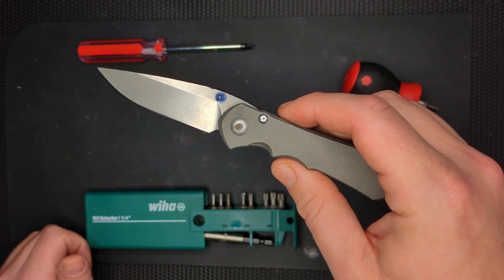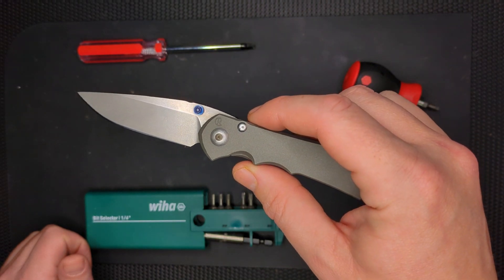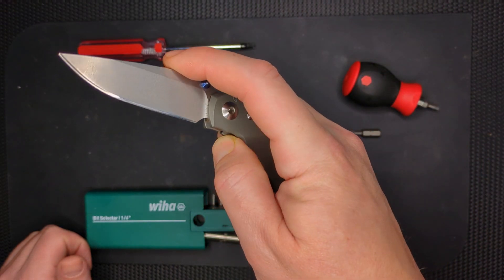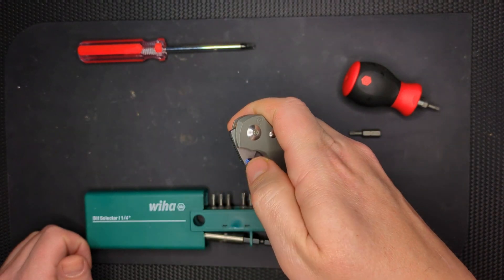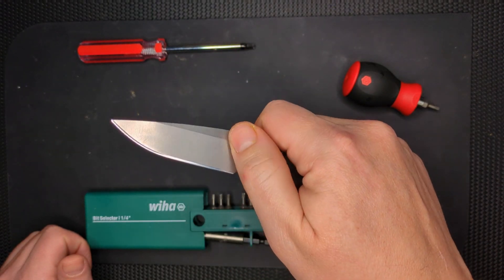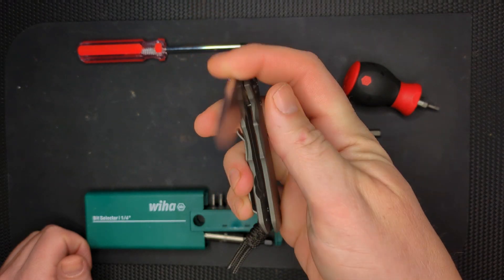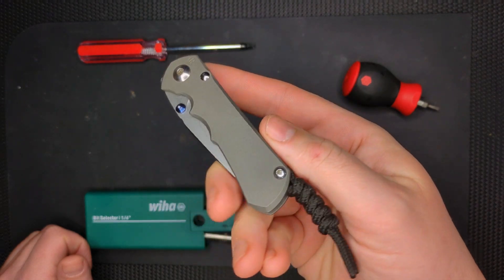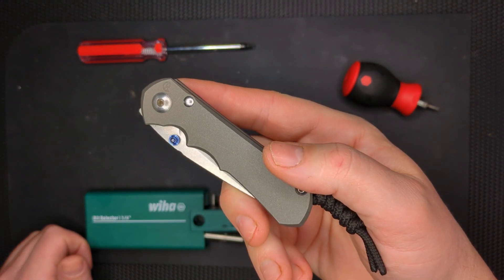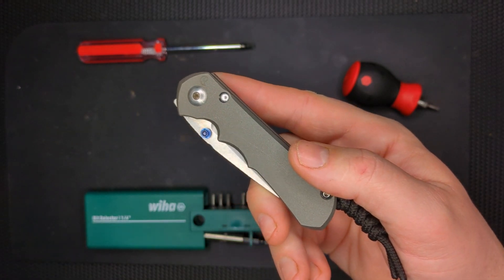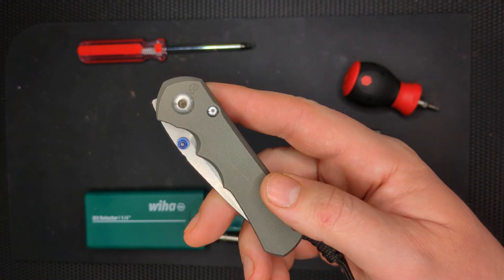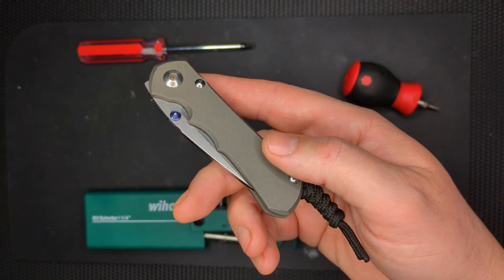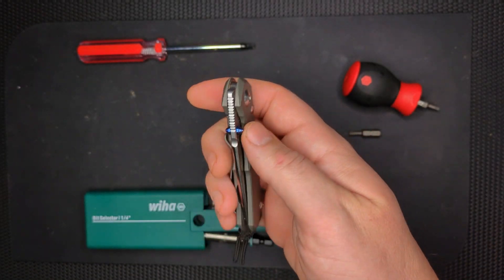Along with Rick Hinderer and Sal Glesser from Spyderco, and Strider, back in the 90s, they started coming out with high-end pocket knives using high-end tool steels with high-end engineering. But Chris Reeves is kind of considered the OG, and you're not really considered a knife collector if you don't have a Chris Reeves knife.